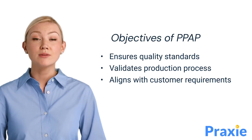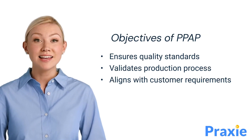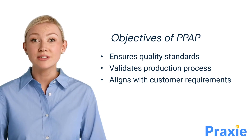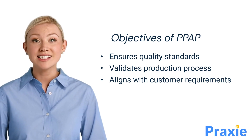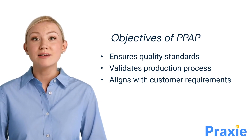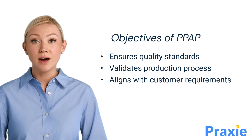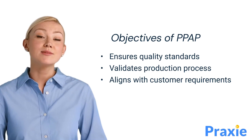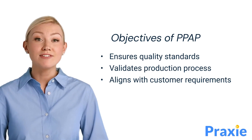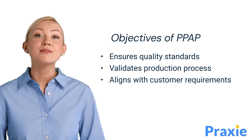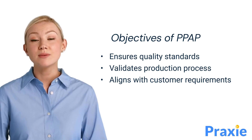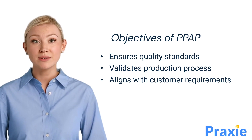The primary objective of PPAP is to ensure that quality standards are met and that the production process consistently produces parts that meet customer requirements. This process provides a thorough validation of manufacturing systems and helps in maintaining a transparent relationship between suppliers and customers.